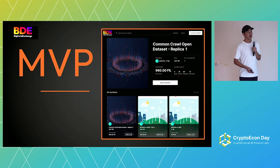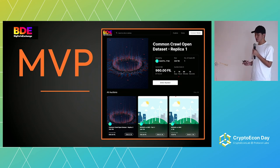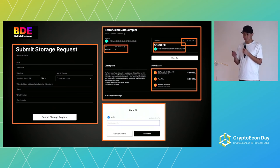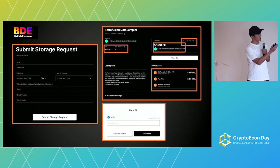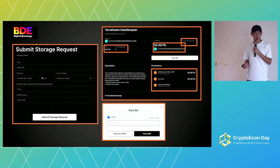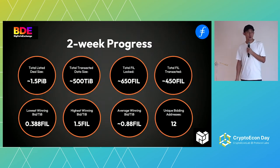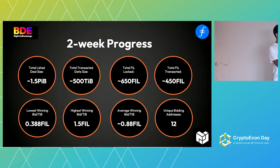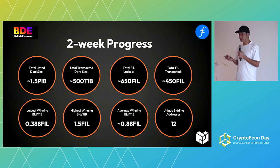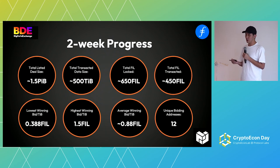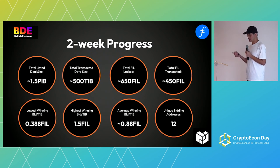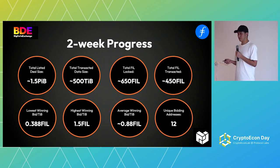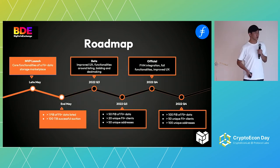This is the MVP we launched two weeks ago. It's a very simple landing page showing the most time-sensitive auctions. As a client or storage provider, all you need is a few clicks to get a deal done. The right side is for clients and the left is for SPs. You get to see the deal size, how many copies there are, and what the highest bidding price is. We currently have 1.5 PiB of deals listed on our platform, and around 33% of it has already been transacted — validating our hypothesis that there is demand to pay for data. The total transacted FIL are 450 FIL. We're very proud of what we've achieved.